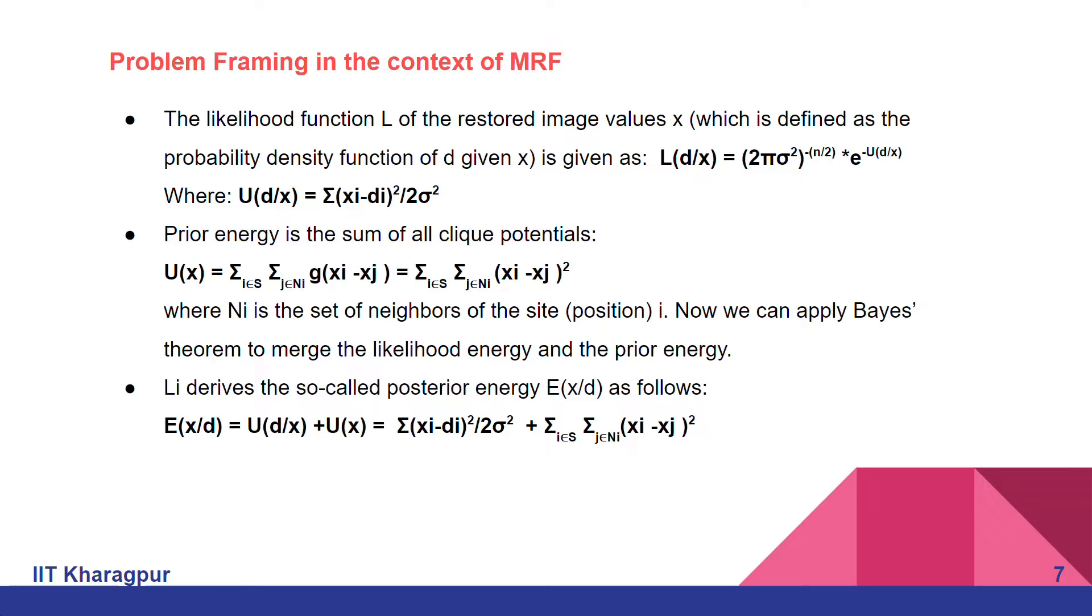Which is summation of (X_i - D_i)² divided by 2 sigma squared variance. The prior energy is the sum of all the clique potentials to preserve the correlation of the image.